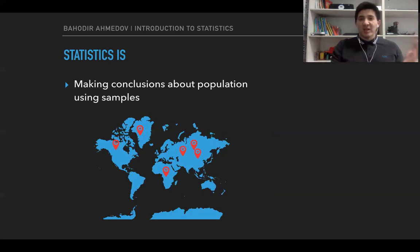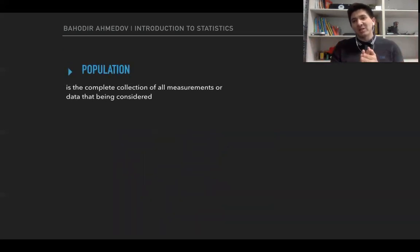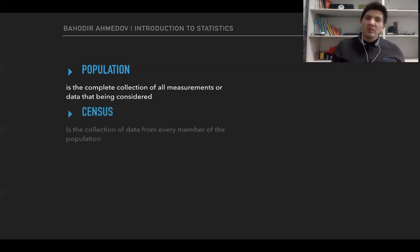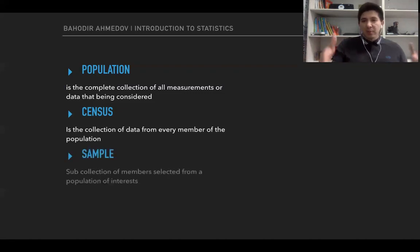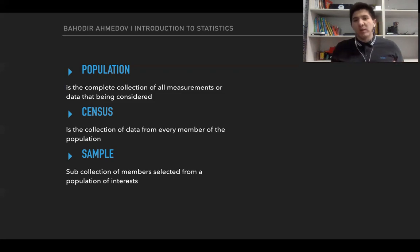The population and the sample are among the important notations of statistics. The population is the complete collection of all measurements or data being considered. Census is the collection of data from each member of the population, and the sample is the sub-collection of the population. Let me give you a couple of examples.